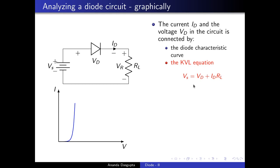Applying KVL to the loop gives: Vs = Vd + Id·RL. This is the other relationship between Vd and Id. We have two relations: one expressed as a graph and the other as a simple algebraic equation. One option is to rewrite the characteristic curve as the equation Id = Is · e^(Vd / η·Vt) − 1 and solve simultaneously with the KVL equation. While the KVL equation is simple and linear, the diode characteristic leads to a complicated non-linear equation requiring numerical methods such as bisection or Newton-Raphson.